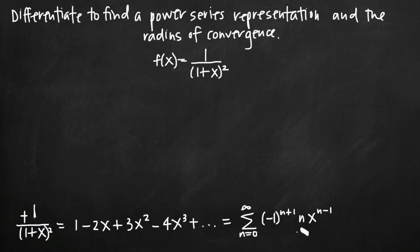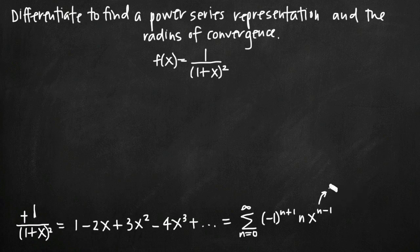We could call this our power series representation, but we really don't like to leave the x variable raised to n minus 1. We prefer x raised to just n — that's the cleanest form. To get that n minus 1 exponent to become just n, we replace n everywhere with n plus 1. Then in the exponent we get n plus 1 minus 1, the plus 1 and minus 1 cancel, and we're left with just x to the n.